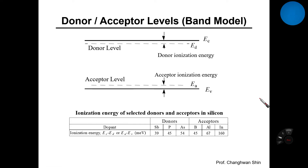In this movie clip, part 4 for the second week, we are going to learn where the donor energy level and acceptor energy level is within a band diagram of silicon crystalline material. As described and drawn in this lecture note, the donor's energy level is drawn very close to the conduction band edge of silicon crystalline material.